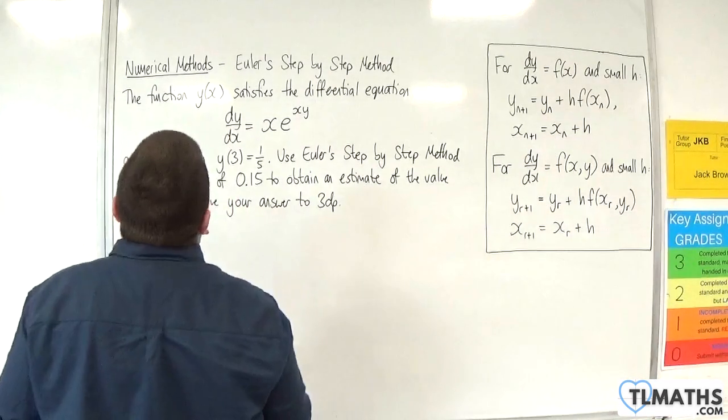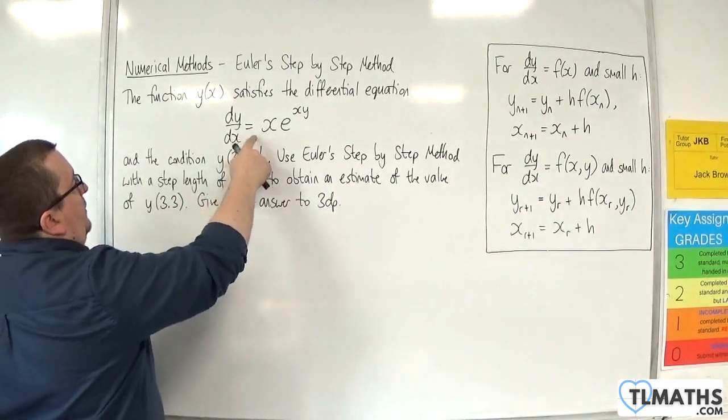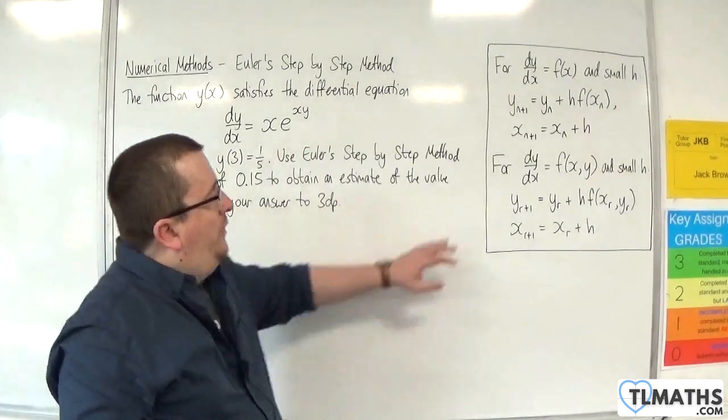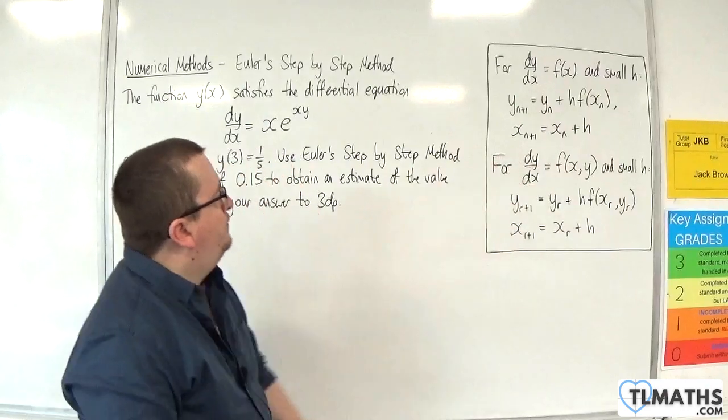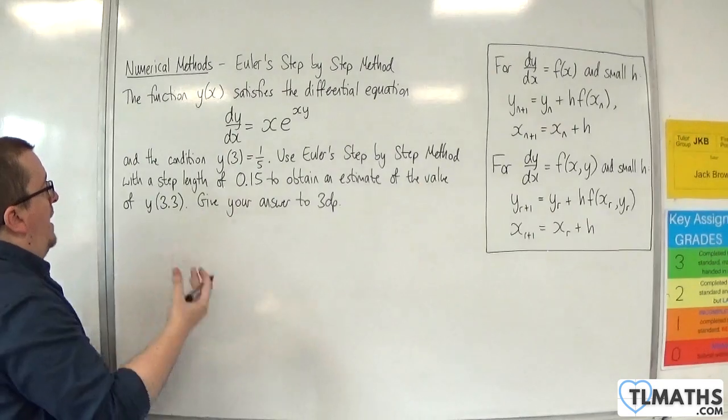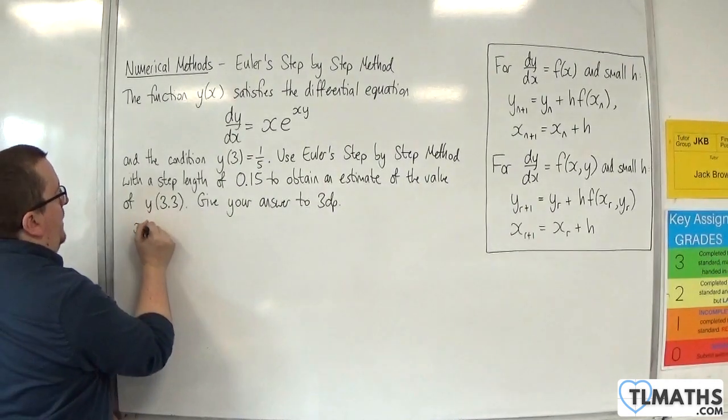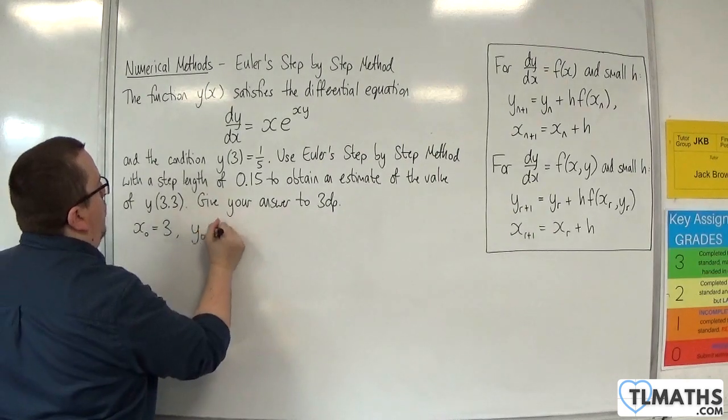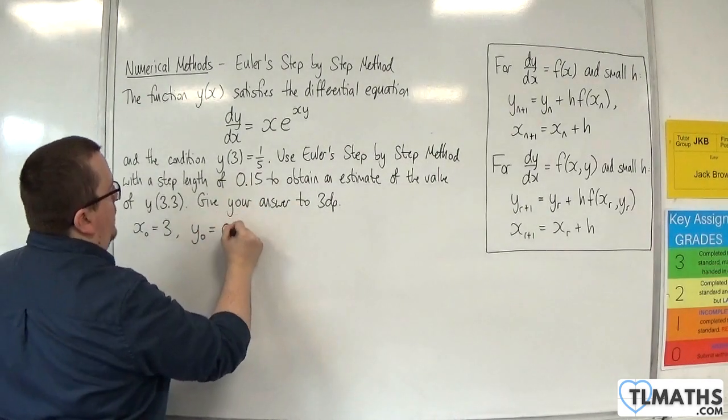So the first thing to note is that we have dy/dx is equal to some function of x and y here. So we're using this one here. So we're told y of 3 is equal to 1/5. So that means that my initial value of x, x₀, is 3. And my initial value of y, y₀, is 1/5. I'll write that as 0.2.